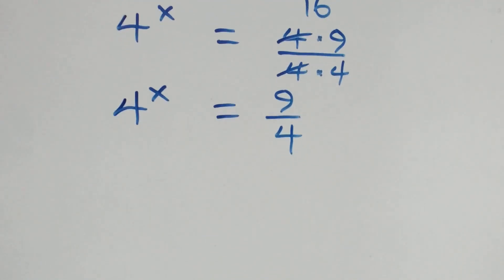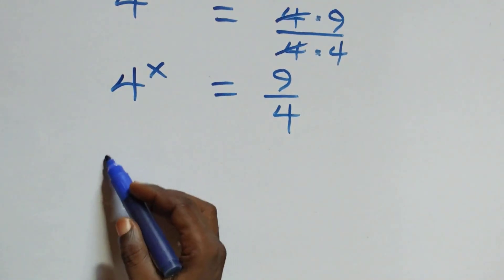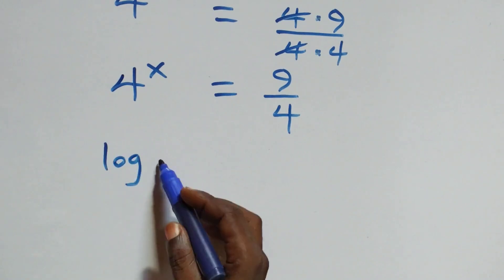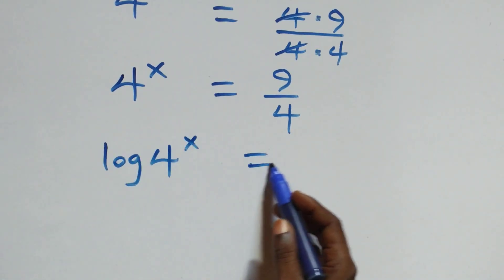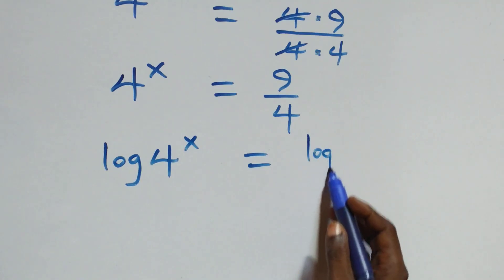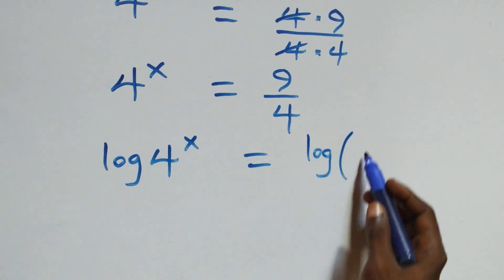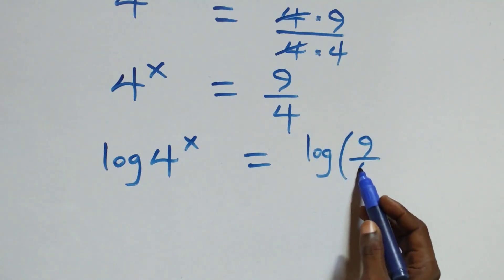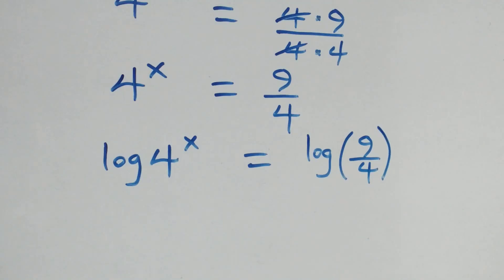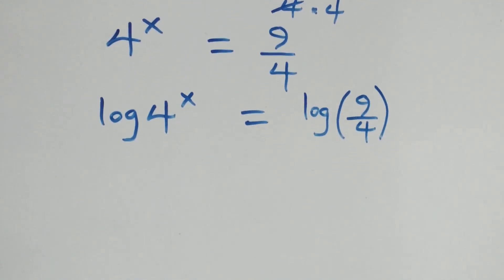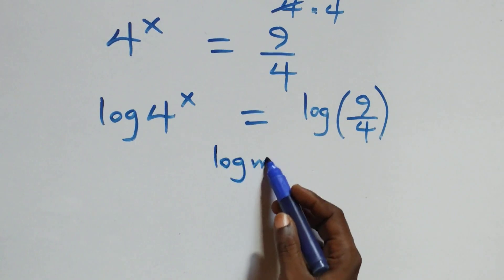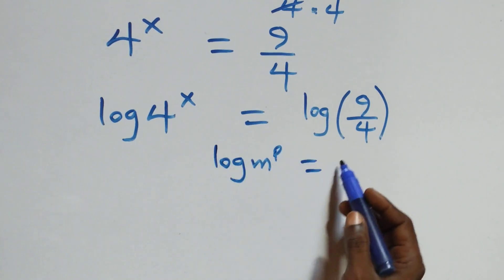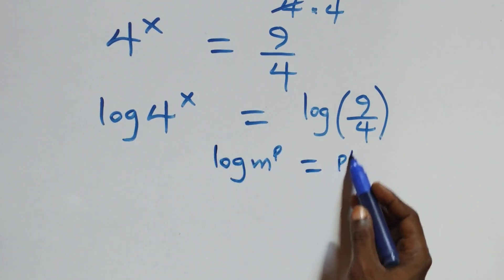From here, we take the log on both sides. We have log of 4 raised to the power x equals log of 9 over 4. We apply the power rule of logarithms: log m raised to the power p is the same as p log m.